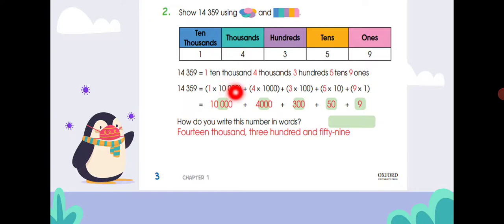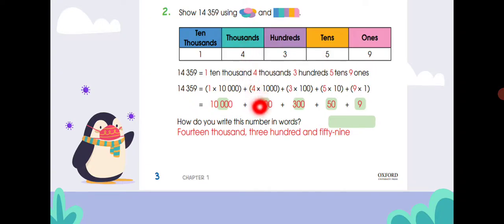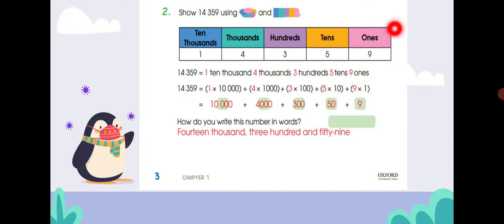You have one counter of ten thousand, multiplied by one, so this is ten thousand. Four multiplied by thousands — you have four counters, that is four thousand. Three multiplied by hundred — you have three counters, so that is three hundred. Five tens are fifty. Nine counters of ones, nine multiplied by one is nine. So: ten thousand, four thousands, three hundreds, fifty, and nine.